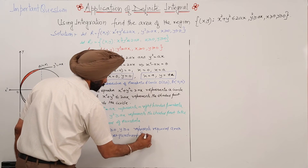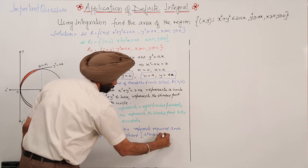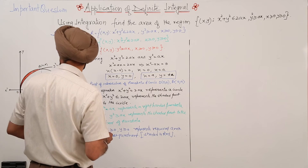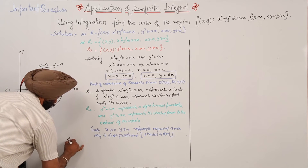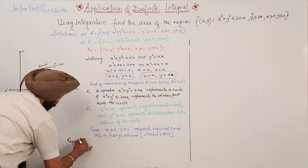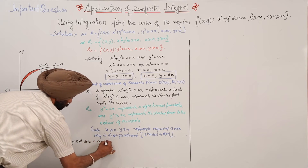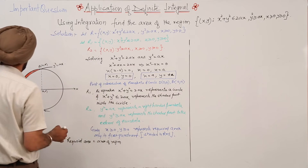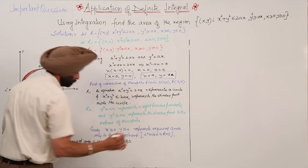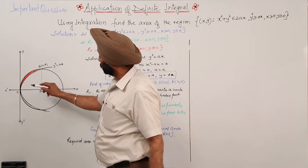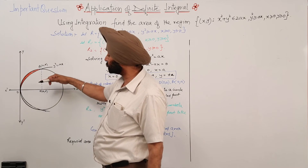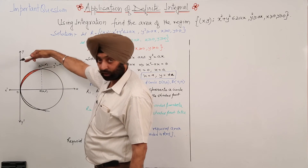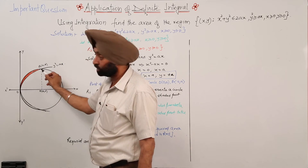That's why the required region is shaded in red in the first quadrant. The circle provides the shaded portion toward the x-axis, and the parabola provides the shaded portion to its exterior toward the circle. The common area — shaded in red — is what we need.